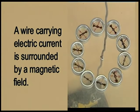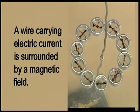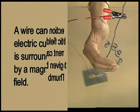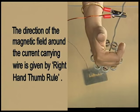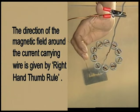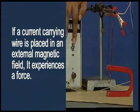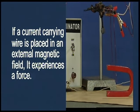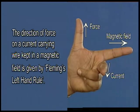Can you recall what you have learned today? A wire carrying electric current is surrounded by a magnetic field. The direction of the magnetic field around the current carrying wire is given by the right hand thumb rule. If a current carrying wire is placed in an external magnetic field, it experiences a force. The direction of force on a current carrying wire kept in a magnetic field is given by Fleming's left hand rule.